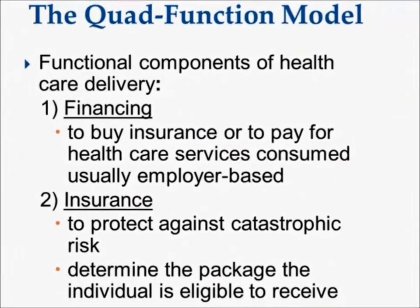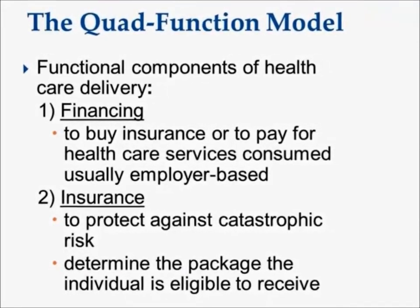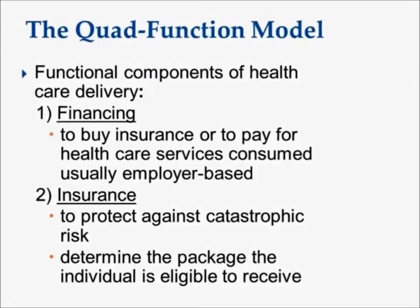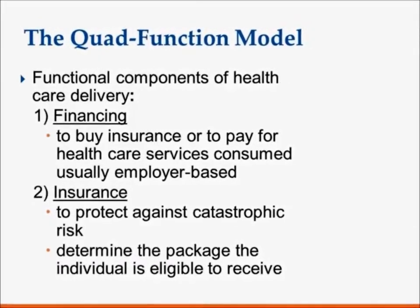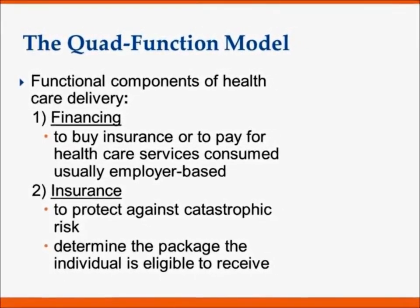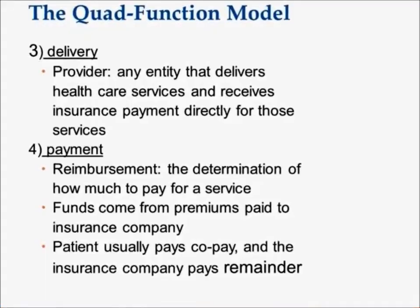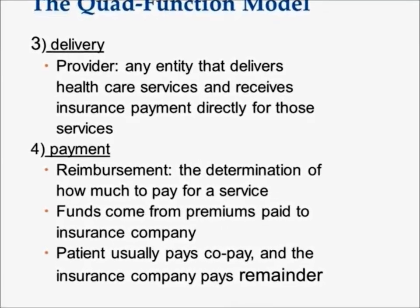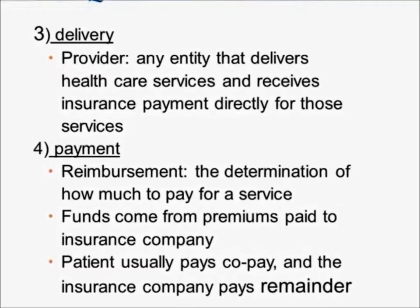Make sure you have a firm understanding of the quad function model — it'll come up time and time again, particularly in Chapter 6. An example quiz or midterm question: which quad function would reimbursement be in? The four functions are financing, insurance, delivery, and payment. Reimbursement lies within payment, along with premiums paid and how much a patient pays compared to an insurance company — that would be a copay.